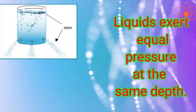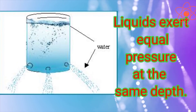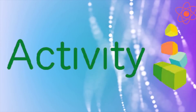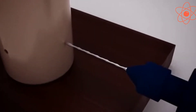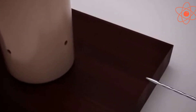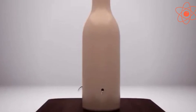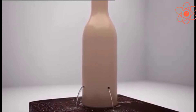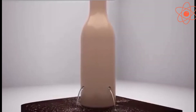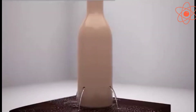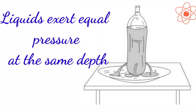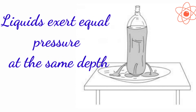Third characteristic: liquids exert equal pressure at the same depth. Let us understand this with the help of an activity. Take an empty plastic bottle and drill some holes all around the bottle at the same distance from the bottom. Now fill the bottle with water. You can see that water coming out from all the holes falls at the same distance from the bottle. This shows that liquids exert equal pressure at the same depth.